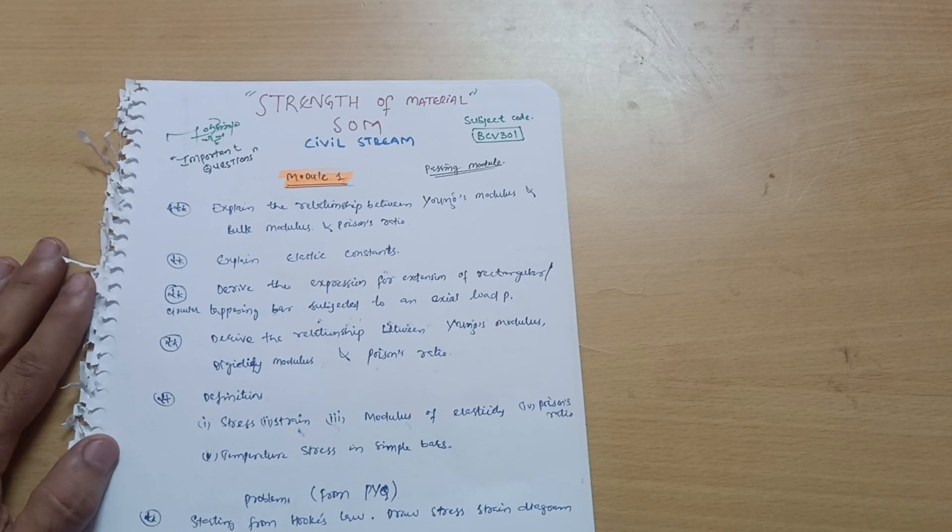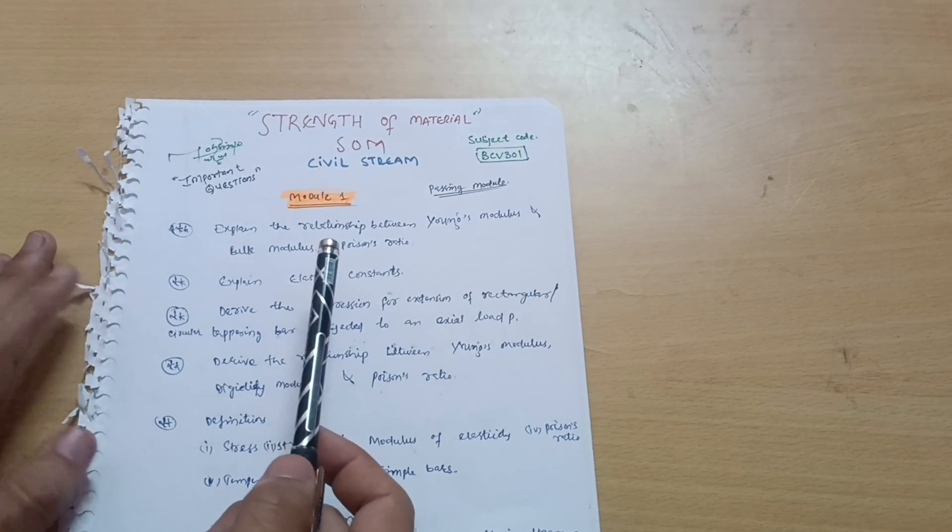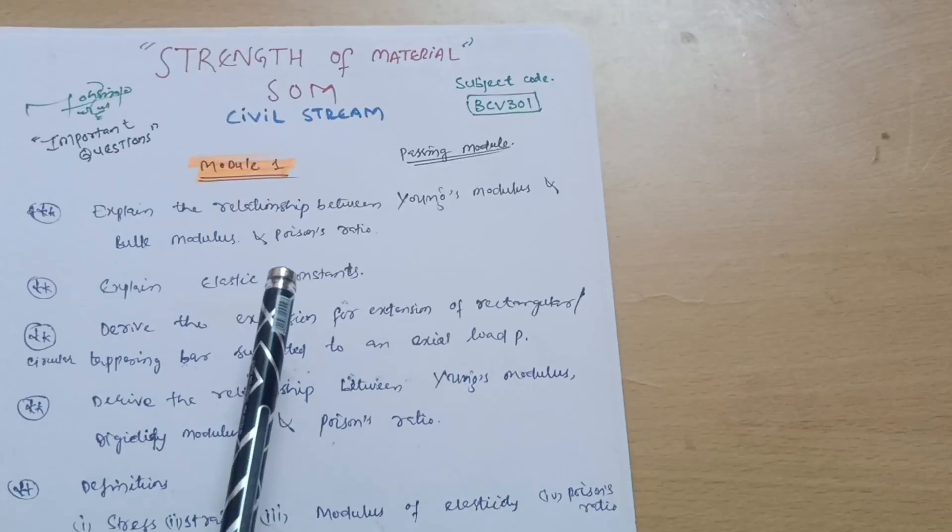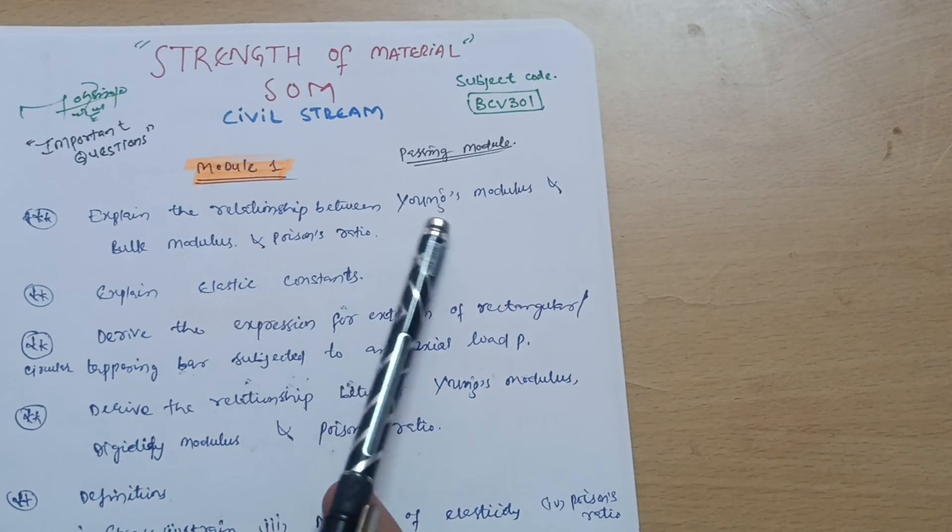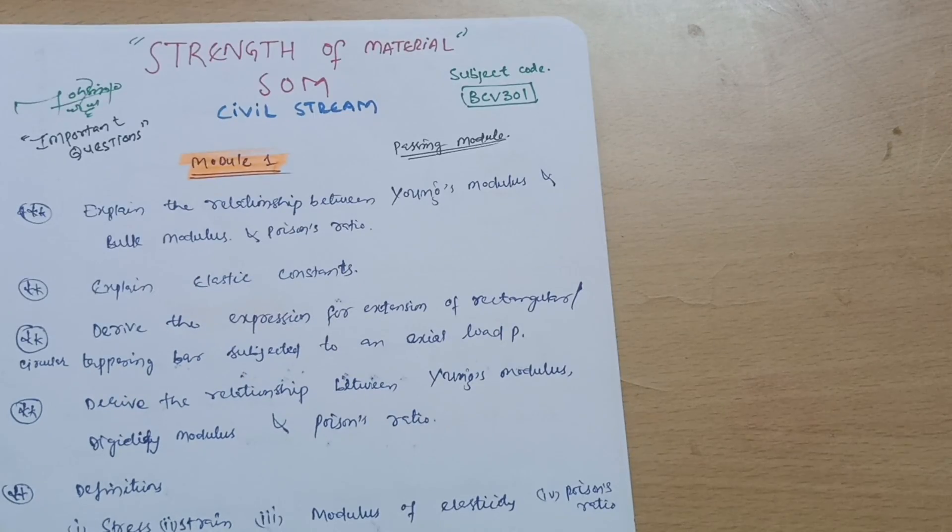Subject code is BCV301. The first question which is the most important one: explain the relationship between Young's modulus, bulk modulus, and Poisson's ratio. Next is explain elastic constants.